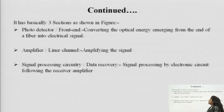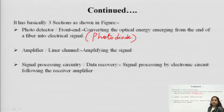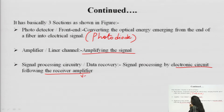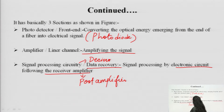To summarize the basic receiver structure: the photodiode converts optical energy emerging from the end of the fiber into electrical signal. The second section is the amplifier, used for amplifying the signal. The third section is the signal processing circuit — also called data recovery circuit or decision making circuit — comprising the electronic circuits following the receiver amplifier, with the end amplifier called the post amplifier.